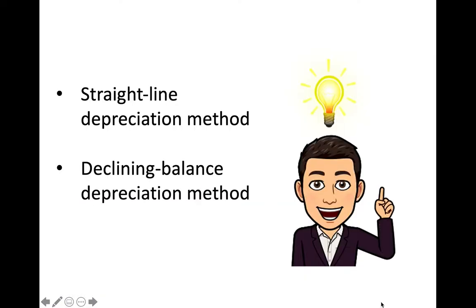There are two ways to calculate how much value an asset has lost: the straight-line depreciation method and the declining balance depreciation method. These are not different ways of calculating the depreciation of assets, but different ways of understanding their value.